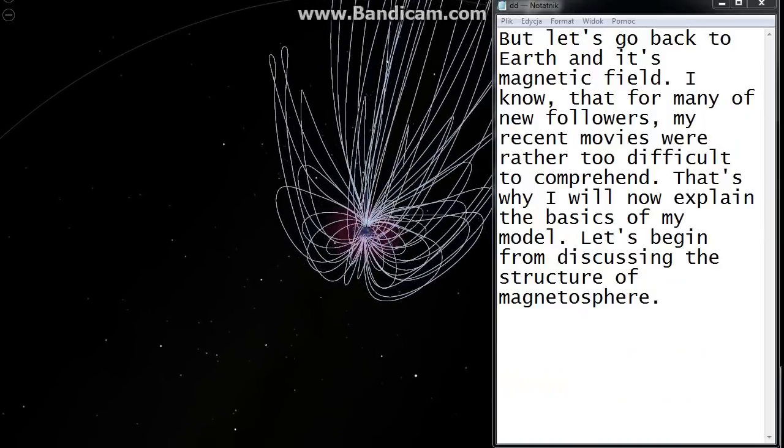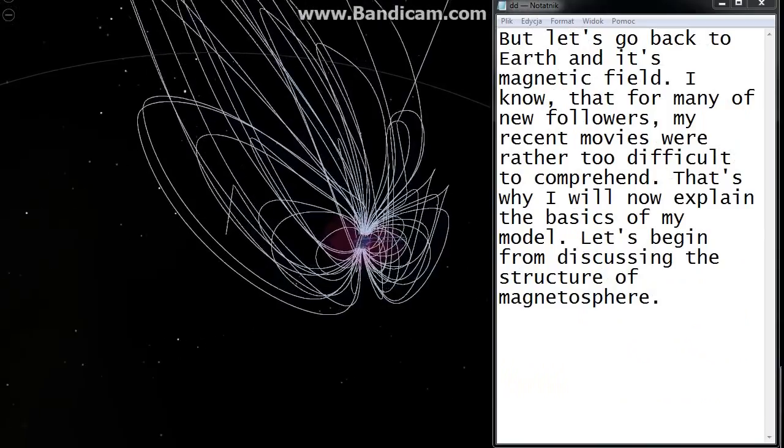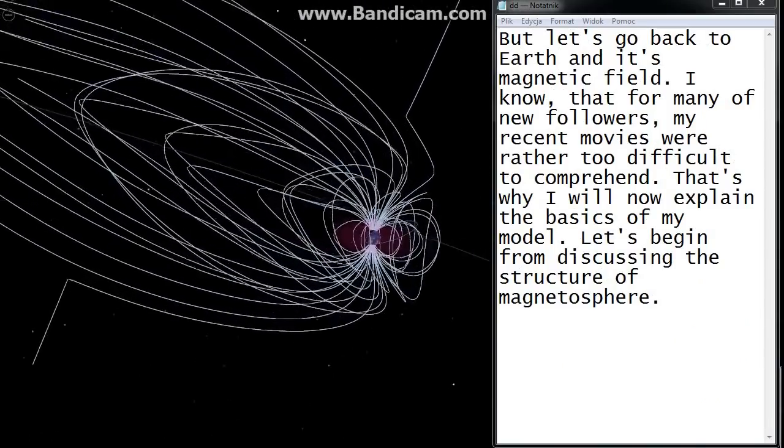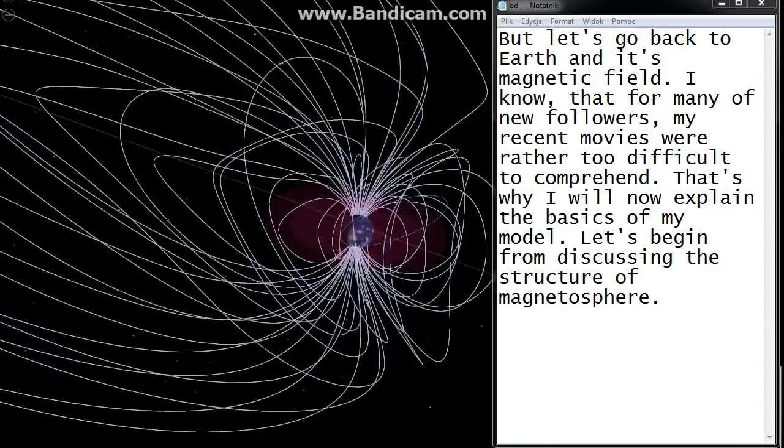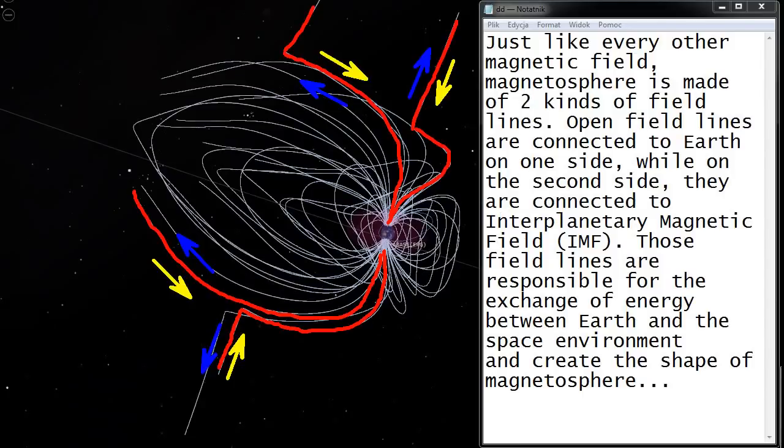But let's go back to Earth and its magnetic field. I know that for many of new followers my recent movies were rather too difficult to comprehend. That's why I will now explain the basics of my model. Let's begin from discussing the structure of magnetosphere. Just like every other magnetic field, magnetosphere is made of two kinds of field lines. Open field lines are connected to Earth on one side, while on the second side they are connected to interplanetary magnetic field, IMF. Those field lines are responsible for the exchange of energy between Earth and the space environment and create the shape of magnetosphere.